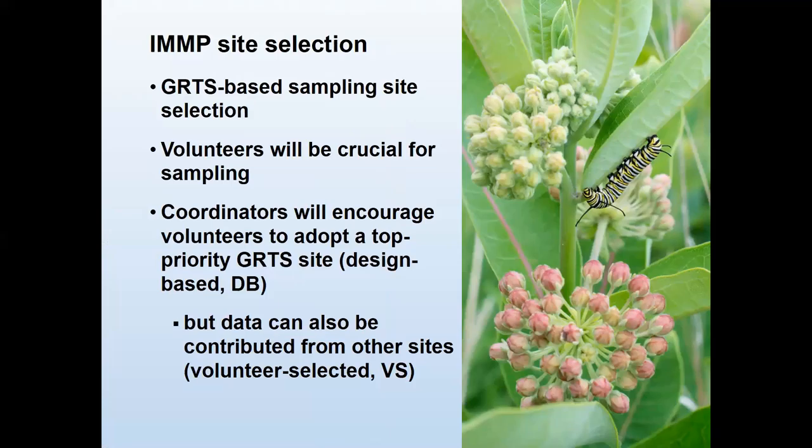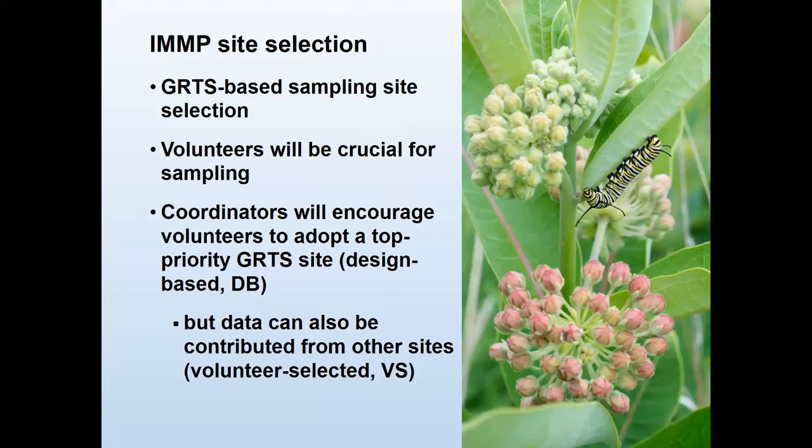Monitoring coordinators will recruit and retain volunteers, asking them to sign up for sites from a priority list. But you're going to get people who say they really want to sample in their backyard, at a local park, or on a friend's property they can access. So do we say no and not use those data? Or do we say yes and somehow deal with integrating those into the analysis? Of course we'd like to say yes — but then what do you do to make sure your result is not biased? That's the point of this talk.